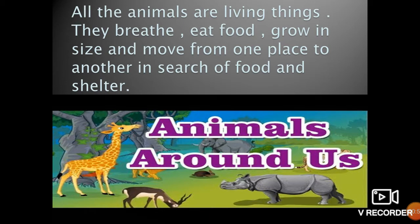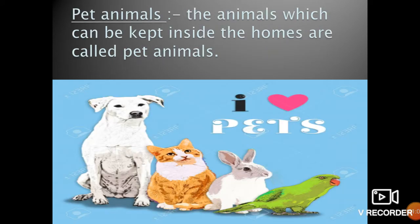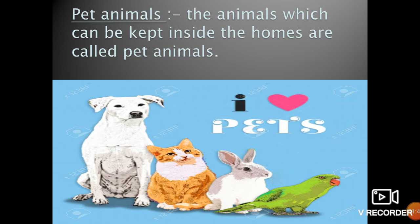Some animals are very useful to us. So let's start. Firstly, pet animals. Some people keep cats, parrots, or dogs in their homes. These animals are kept for companionship and fun. The animals which can be kept inside the homes are called pet animals. People get attached to them.